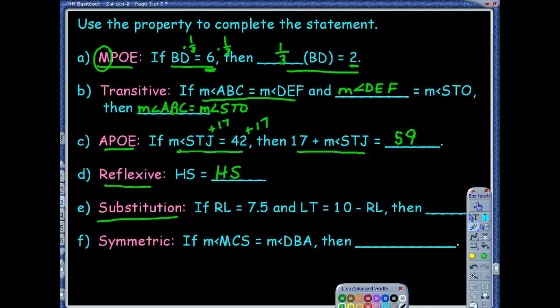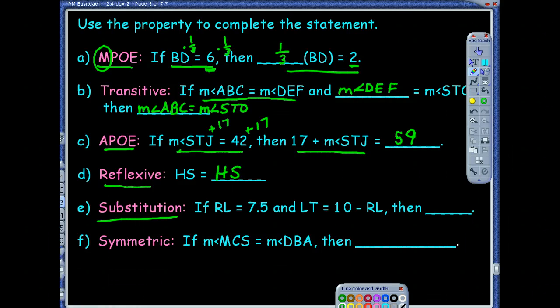Substitution. If RL equals 7.5 and LT equals 10 minus RL, then what can we conclude? Well, substitution, I know I'm just taking something and putting it in its place. I already know what RL equals, so I'm going to put a 7.5 in place of the RL. So 10 minus a 7.5, that should get me to 2.5. So what would I write? So I'm going to write that LT should equal a 2.5. Good job.